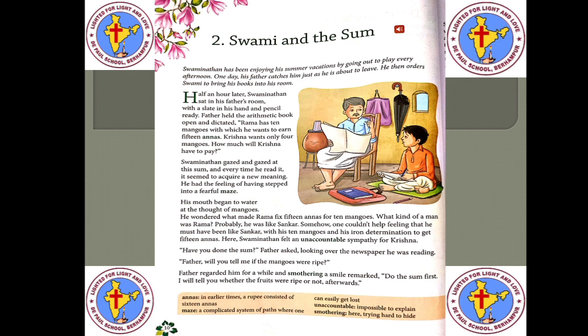Swaminathan's mouth watered thinking about the mangoes. He wondered about Rama — what made him fix 15 anas for only 10 mangoes, and what kind of man he was. He compared Rama to his friend Shankar, imagining him with a very strong determination to get 15 anas. And he also felt sorry for Krishna, who wanted to buy only 4 mangoes.